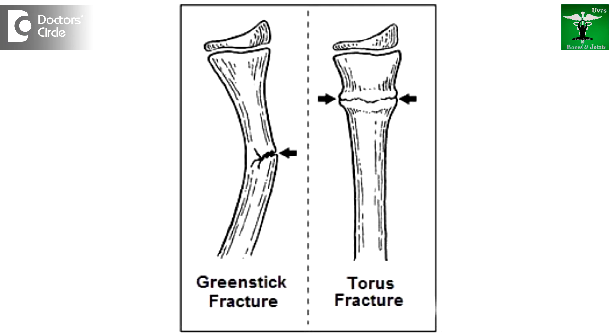Greenstick fractures are fractures of one cortex of the bone, because the excess periosteum prevents the other end of the fracture from breaking completely.